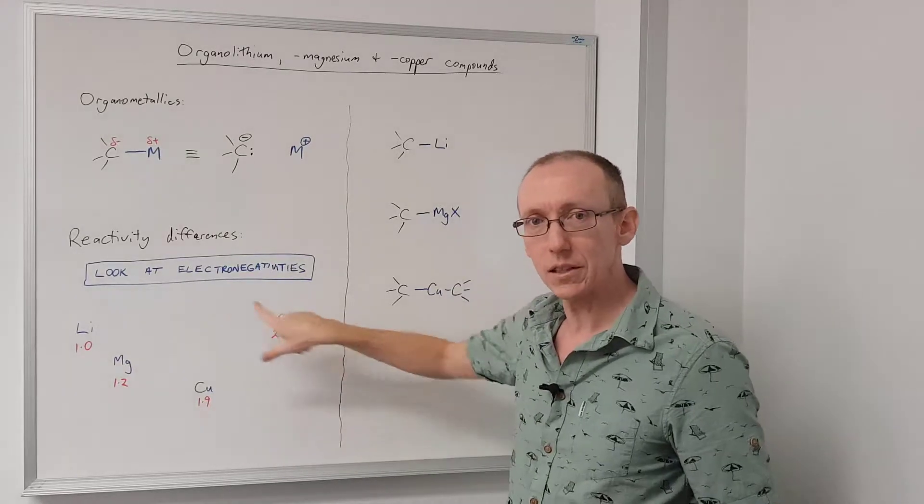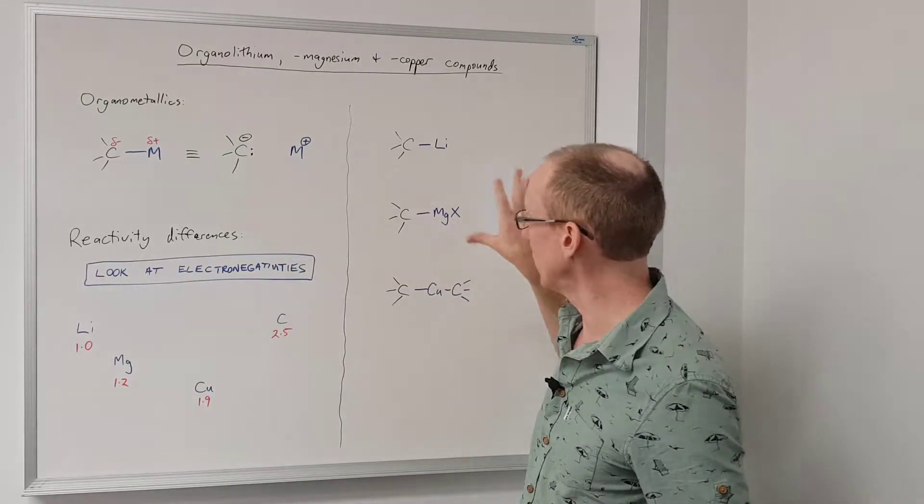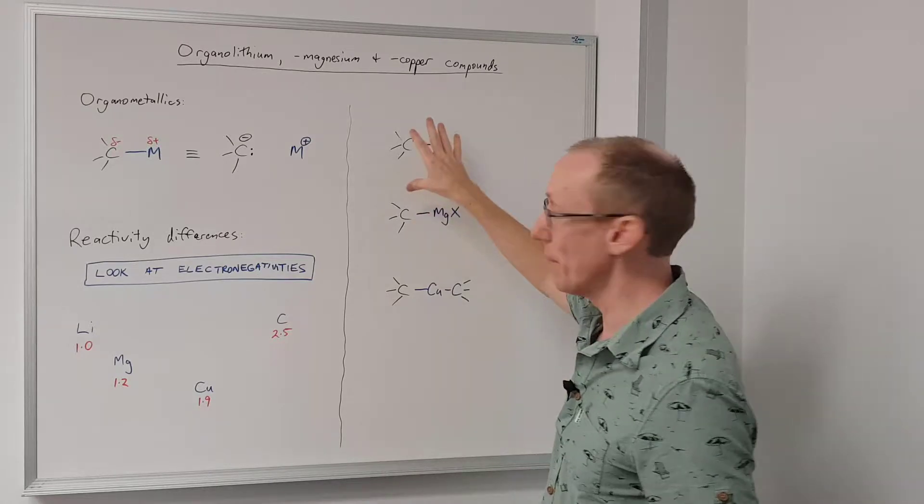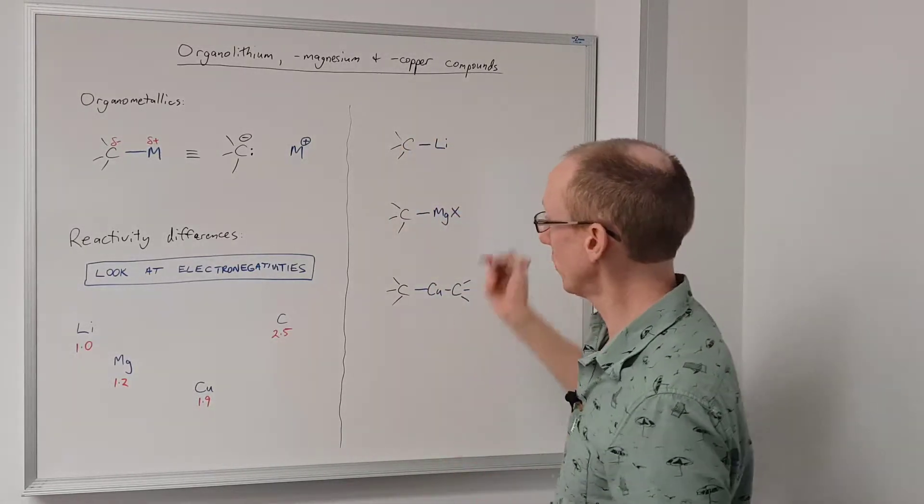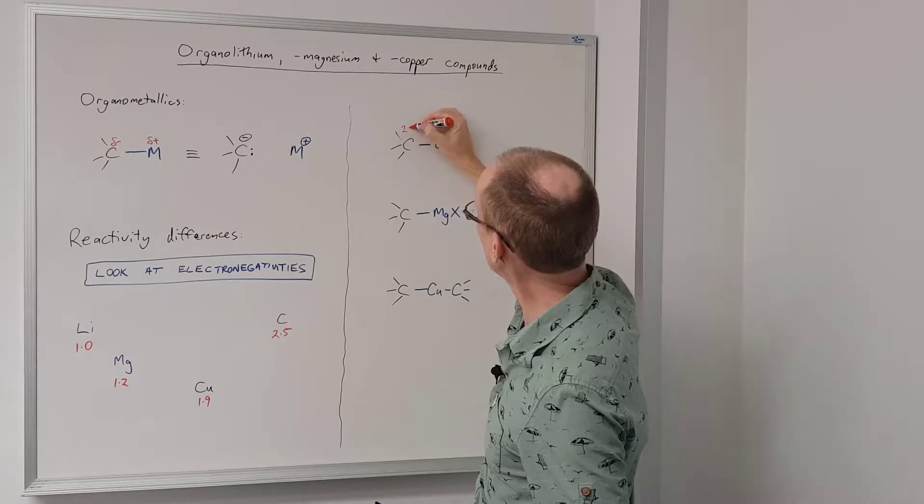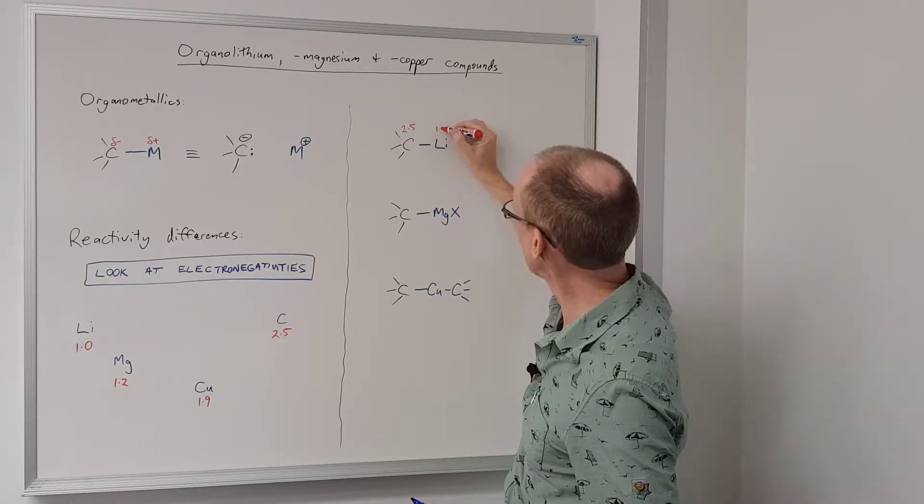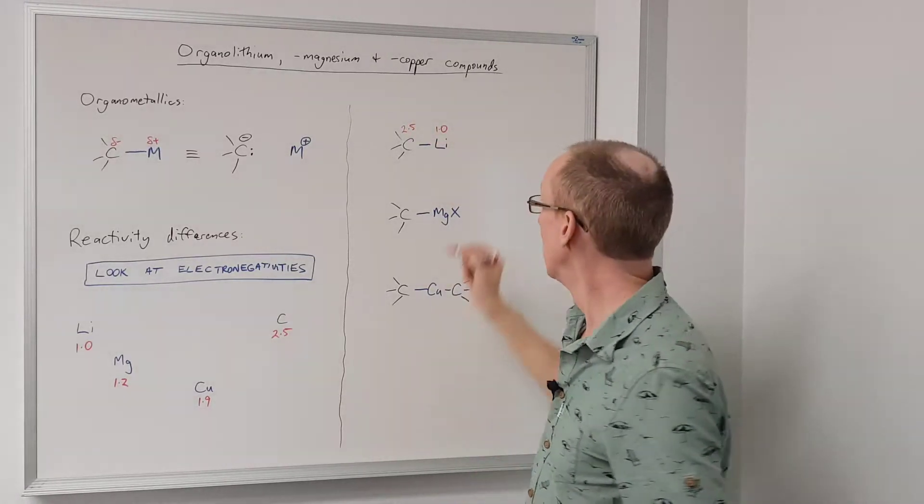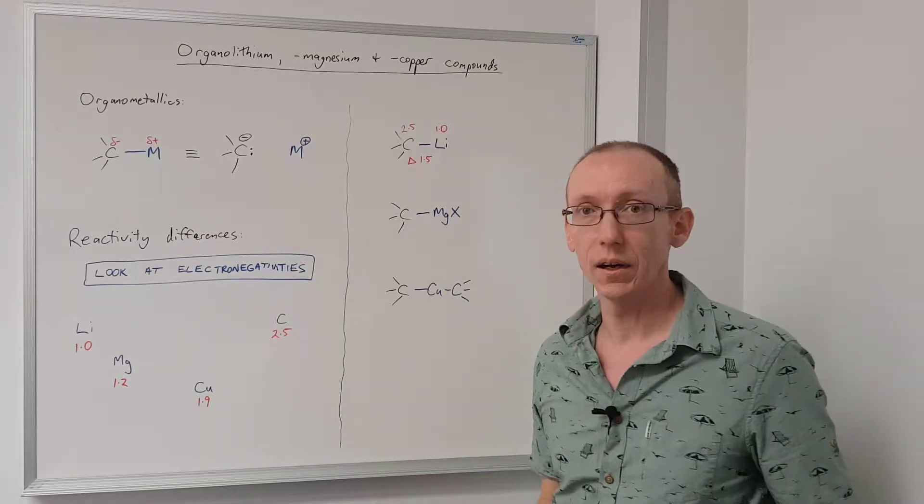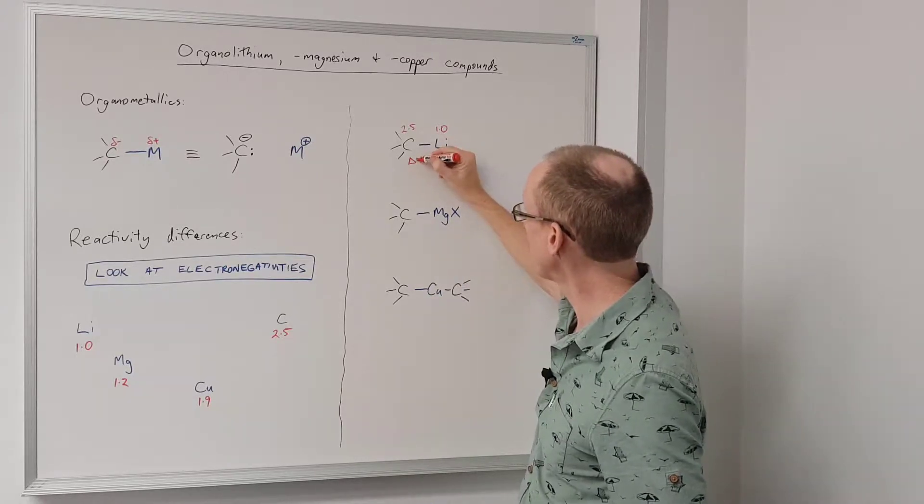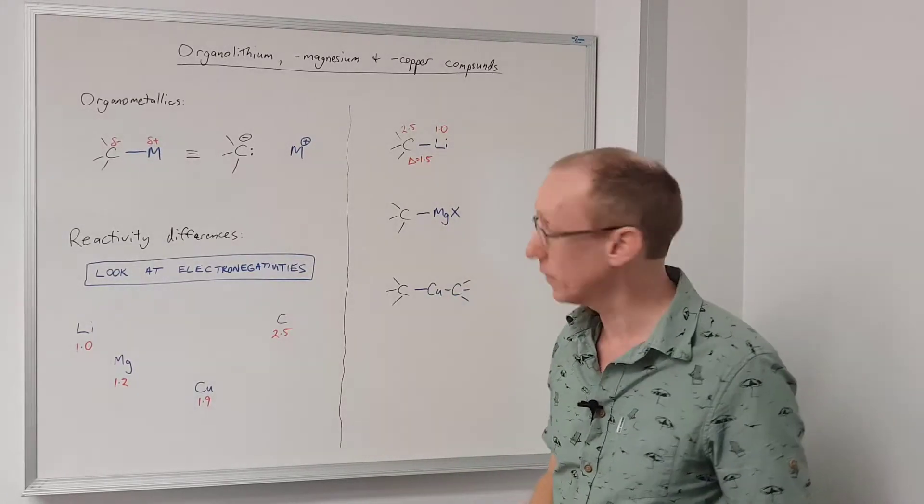So if we looked at these electronegativities and we put them together into these reagents, we can form a picture of why we see the difference in reactivity. So 2.5 for carbon versus 1.0 for lithium means we have a difference in electronegativity, in this case, of 1.5.